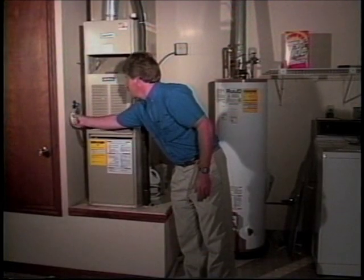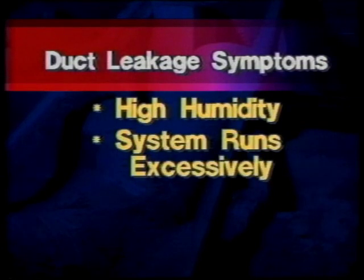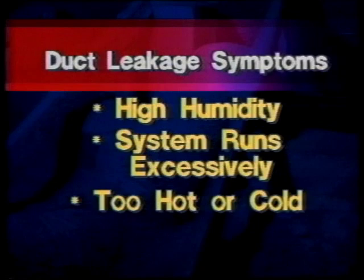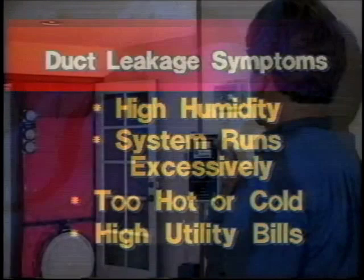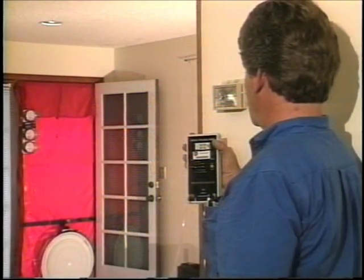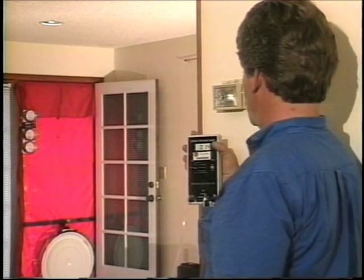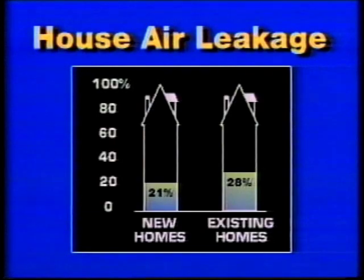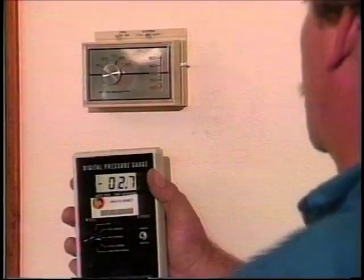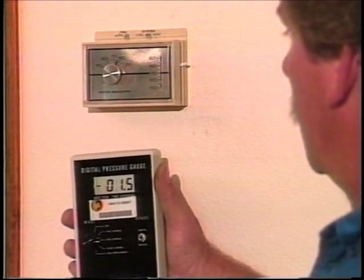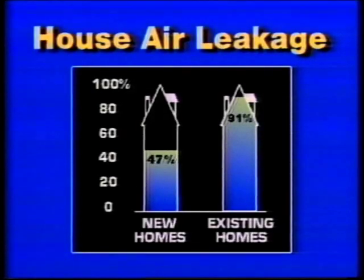Without specialized training, it is often difficult to know if you have a duct leak problem. The symptoms of major duct leaks include high humidity, the heating and cooling system running excessively, a house that is too hot or cold, and high utility bills. For the building scientist, one of the big clues of duct leakage is high infiltration. Natural infiltration changes about 25% of the house air each hour. When the central forced air system turns on, however, air infiltration increases by two or three times, indicating that duct leaks are pulling a lot of air into homes.